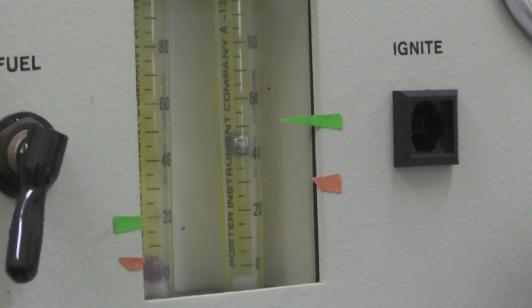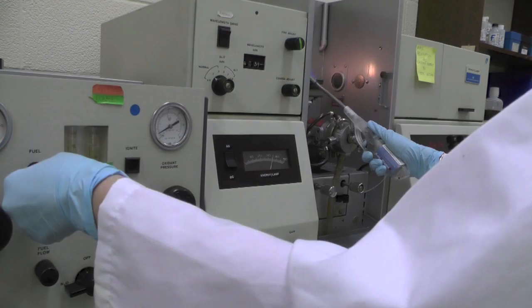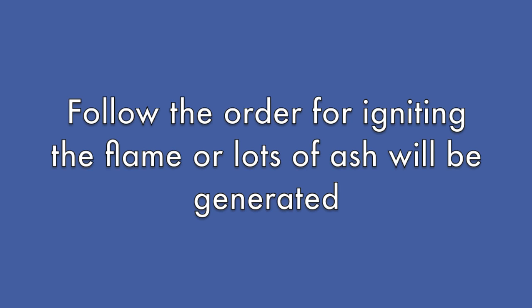Turn the control to air while lighting the flame with a lighter. Turn the fuel to on position. You should observe a nice blue flame about 2 inches tall. Please note that it is important to follow the proper order to ignite the flame, or you will create a lot of ashes but fail to ignite the flame.